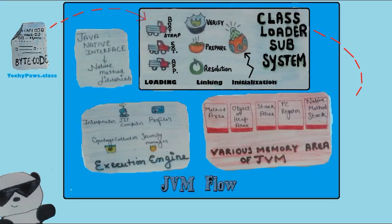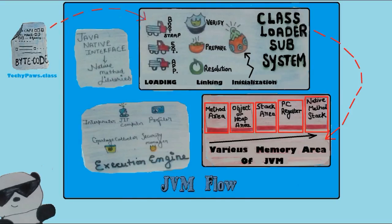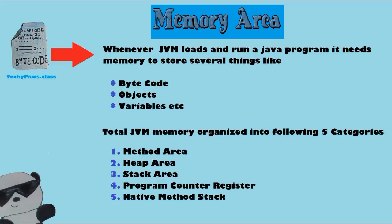When JVM loads and runs a Java program, it needs memory to store several things like byte code, objects, and variables. These memory areas are organized into five categories: method area, heap area, stack area, PC register, and native method stack.